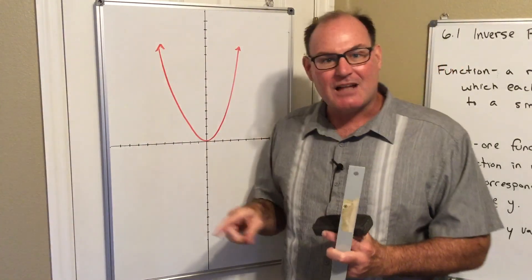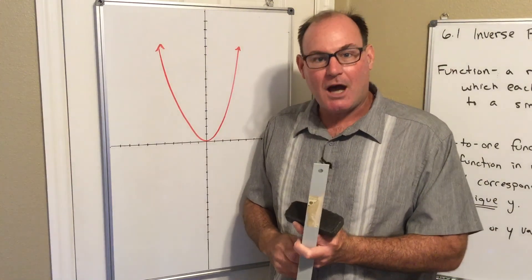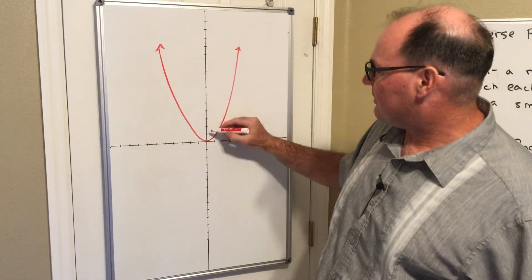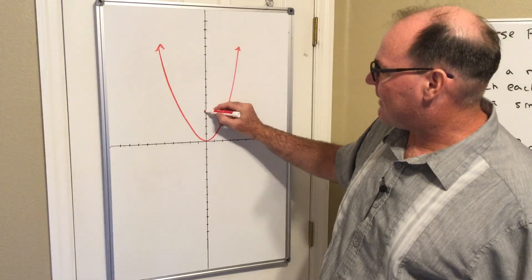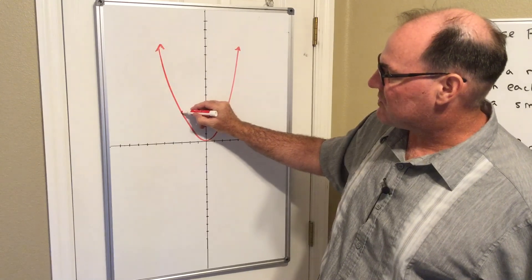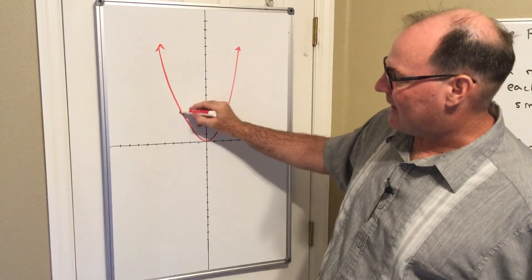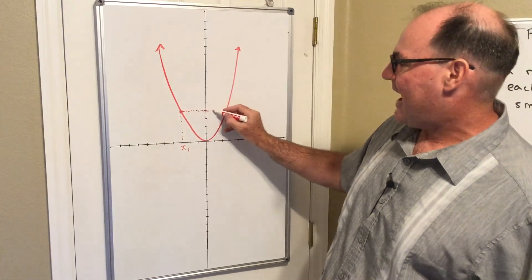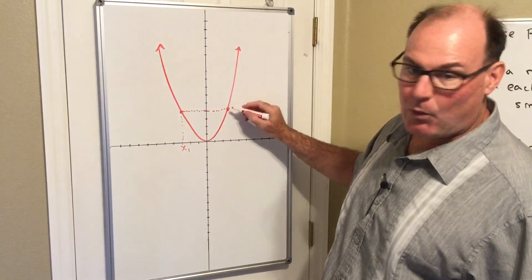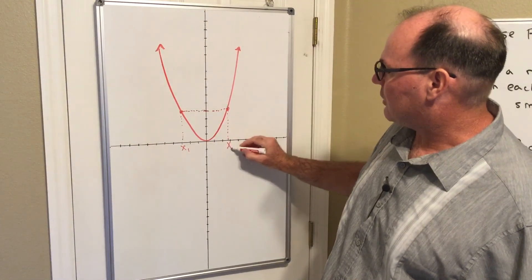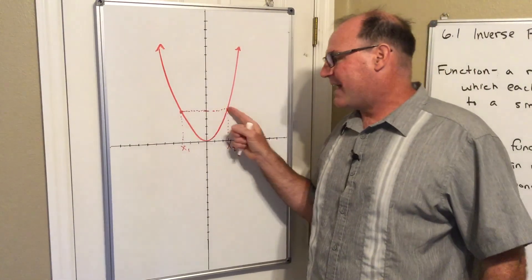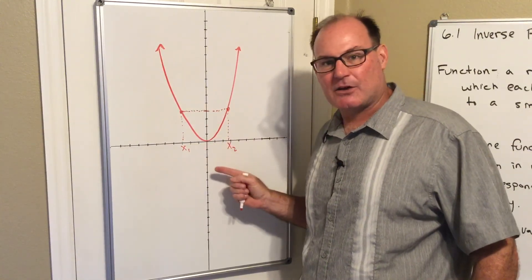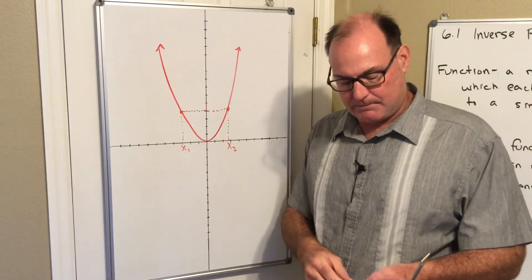Now, our parabola is not one-to-one because y values are repeated. So for instance, up here, I have the y value one, two, three. Here's the y value four. The y value four is associated with this x value right here, whatever it would be for this particular graph. And it's also associated with this x value, too. So this y value is produced by two different x values. So it's not one-to-one.